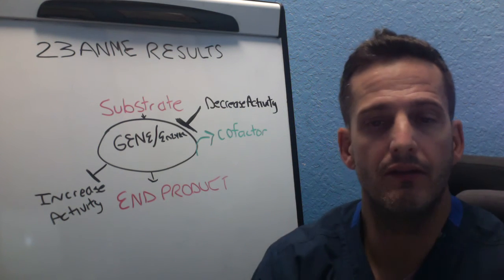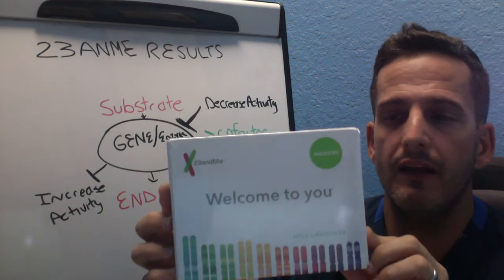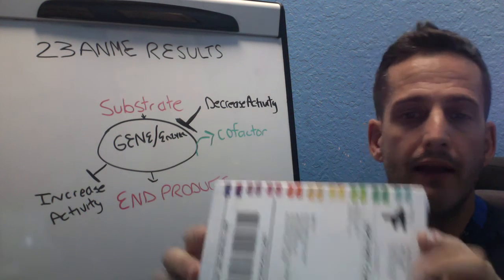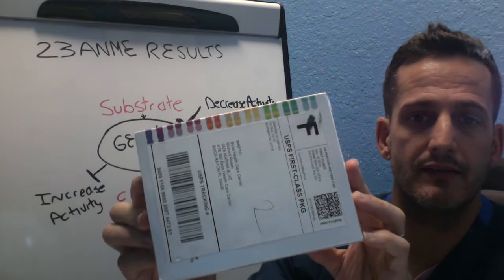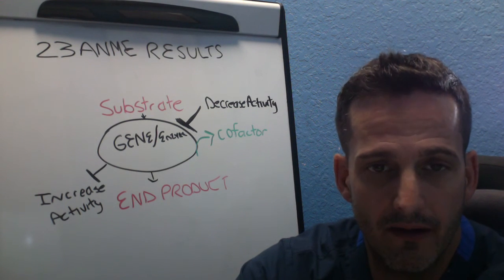So let's say you've been to 23andMe, you've spit into a tube, you got this kit and you sent it back. It already has its mailing address contained, you sent it back and it tells you that they have your results and they're ready to go.